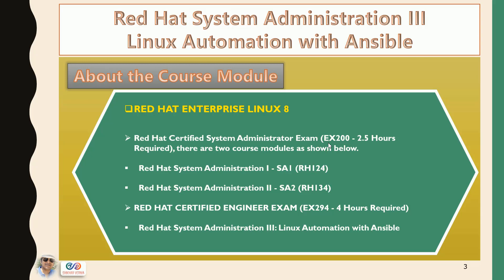I have already created separate course modules for SA1 and SA2, but this course module is for the preparation of RHCE — Red Hat Certified Engineer. The name of the course is Red Hat System Administration 3: Linux Automation with Ansible, and it is designed for Linux system administrators and developers who need to automate provisioning, configuration, application deployment, and orchestration.